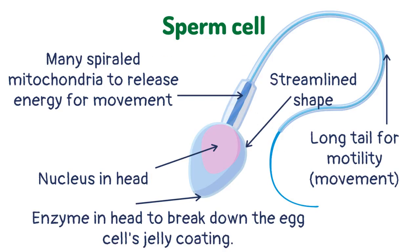The sperm cell has several adaptations that help it perform its function. It has an enzyme in the head to break down the egg cell's jelly coating and allow the sperm to enter the cell. The sperm cell has a long tail for movement and has many mitochondria to release energy for movement.